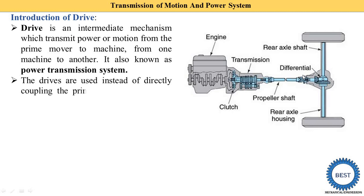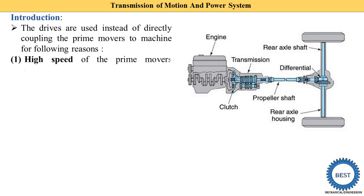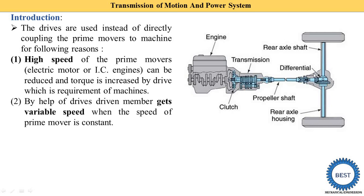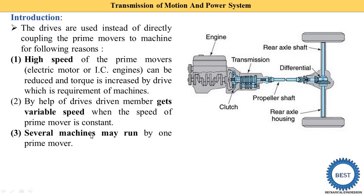The first reason for using a drive is that the high speed of the prime mover — an electric motor or IC engine — can be reduced and torque can be increased. For example, if an engine rotates at 4000 RPM and is directly connected to the rear wheels, you cannot change the speed. But using a drive, the driven member gets variable speed while the prime mover speed remains constant, allowing various vehicle speeds through the gearbox.